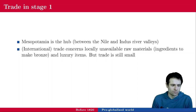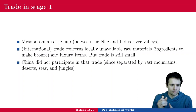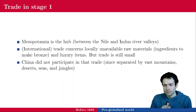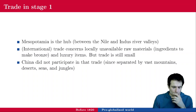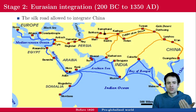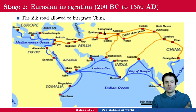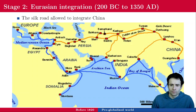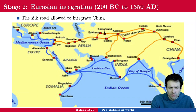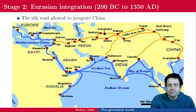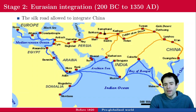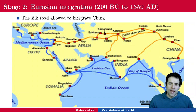China did not participate in that trade — they were separated by vast mountains, deserts, seas, and jungles. In stage two, the Silk Road allowed China to integrate with the rest of the Middle East and India, via sea and land routes through a series of cities. Yet trade was still relatively small — mostly exotic goods like spices and luxury items.